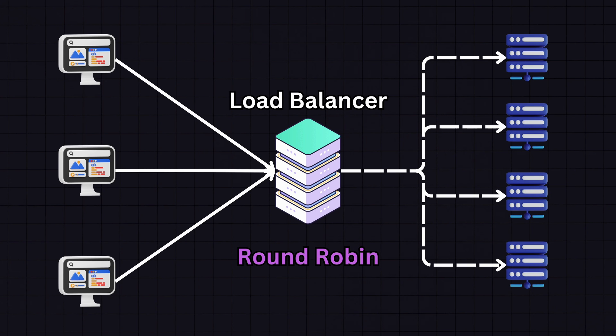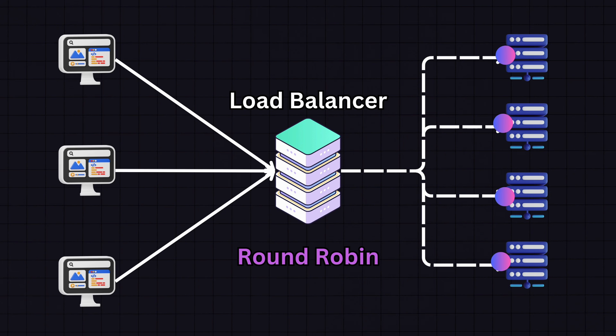The first one is round robin, which is the simplest form of load balancing, where each server in the pool gets a request in sequential, rotating order. When the last server is reached, it loops back to the first one. This type works well for servers with similar specifications and when the load is uniformly distributable.